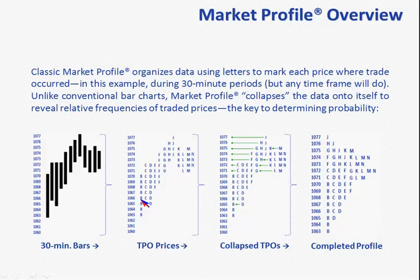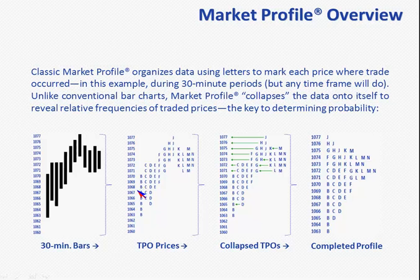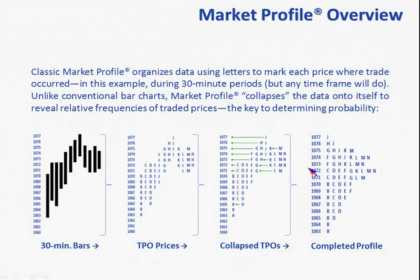What Pete Stottlemyre did with the original market profile view was label the first 30 minutes of the day B, the next 30 minutes C, the next 30 minutes D. As you go through the day, each 30-minute section gets a different letter. At the end of the day, he collapsed that data onto itself to the left, and you end up with something called a completed profile.